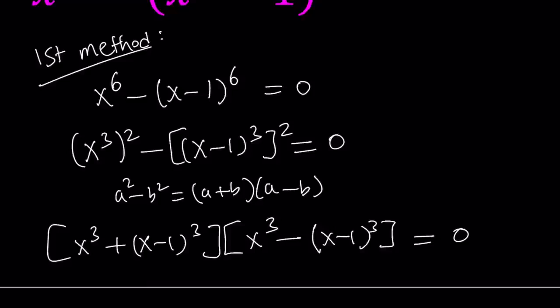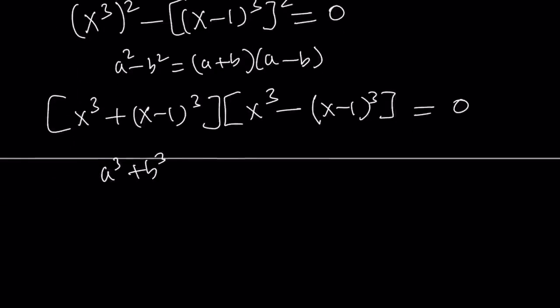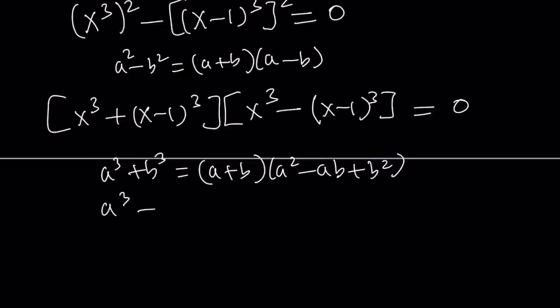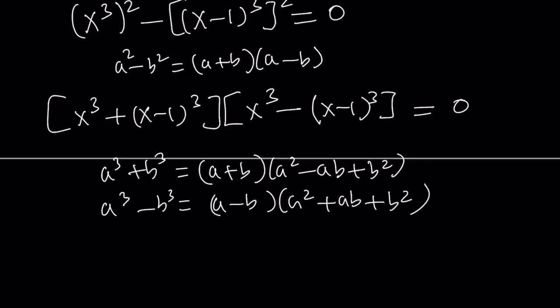Notice that the first factor is a sum of two cubes, so we're going to use another formula — sum of two cubes. That is a cubed plus b cubed equals a plus b times a squared minus ab plus b squared. And the second one is a difference of two cubes, and that formula is very similar to this one. Here's what the formulas are. Let's go ahead and apply those.